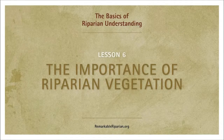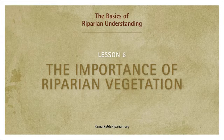Lesson 6 will focus on the importance of vegetation to riparian function. Of the three basic components of riparian function—soil, water, and vegetation—the last is the only one we can manage, so riparian vegetation becomes our key to healthy creeks and rivers.